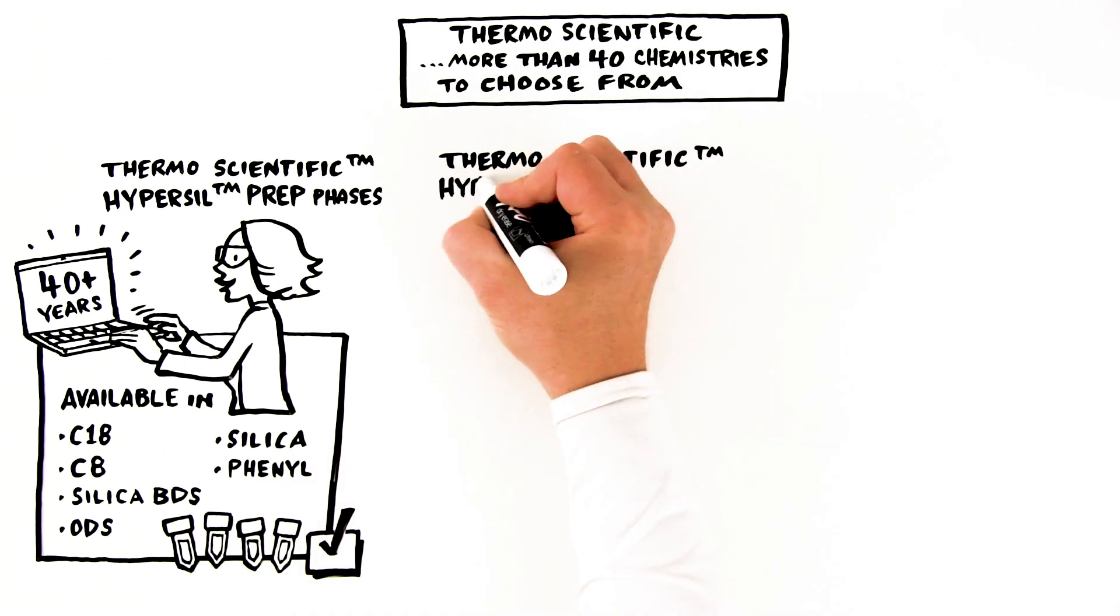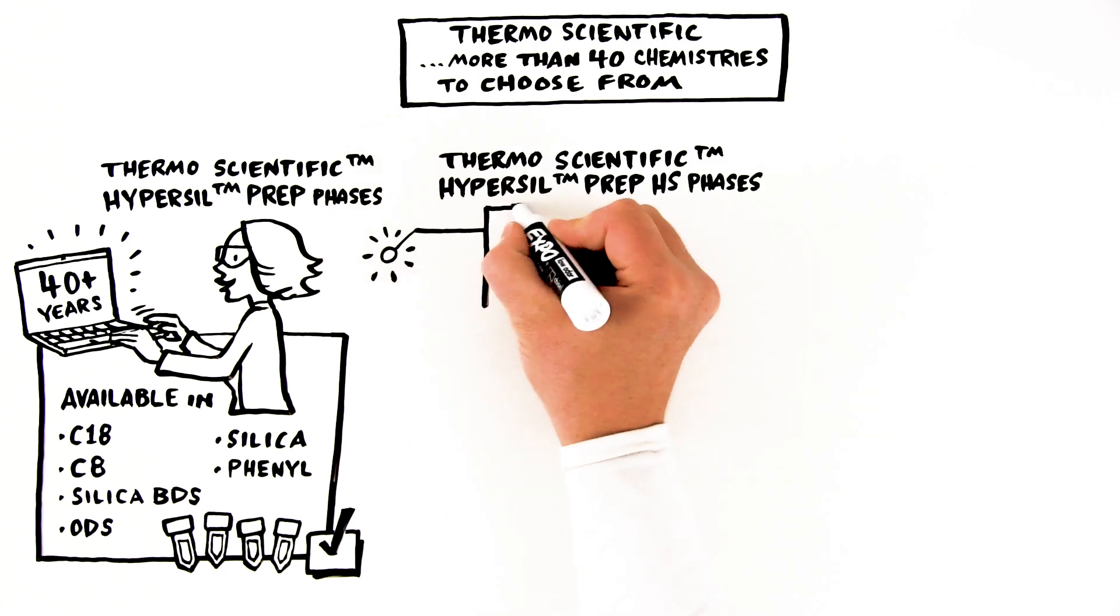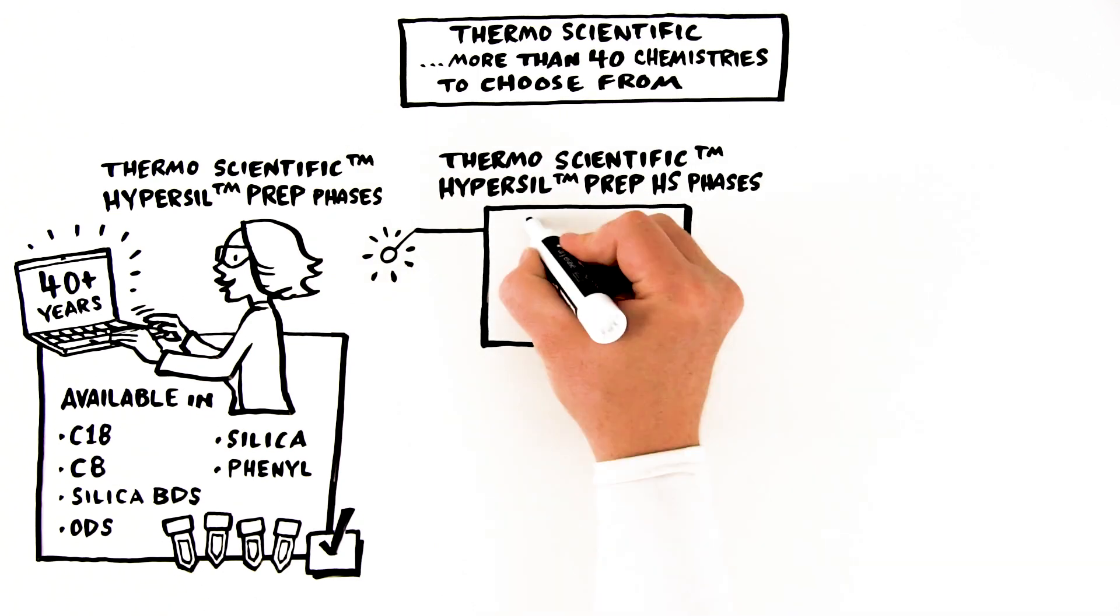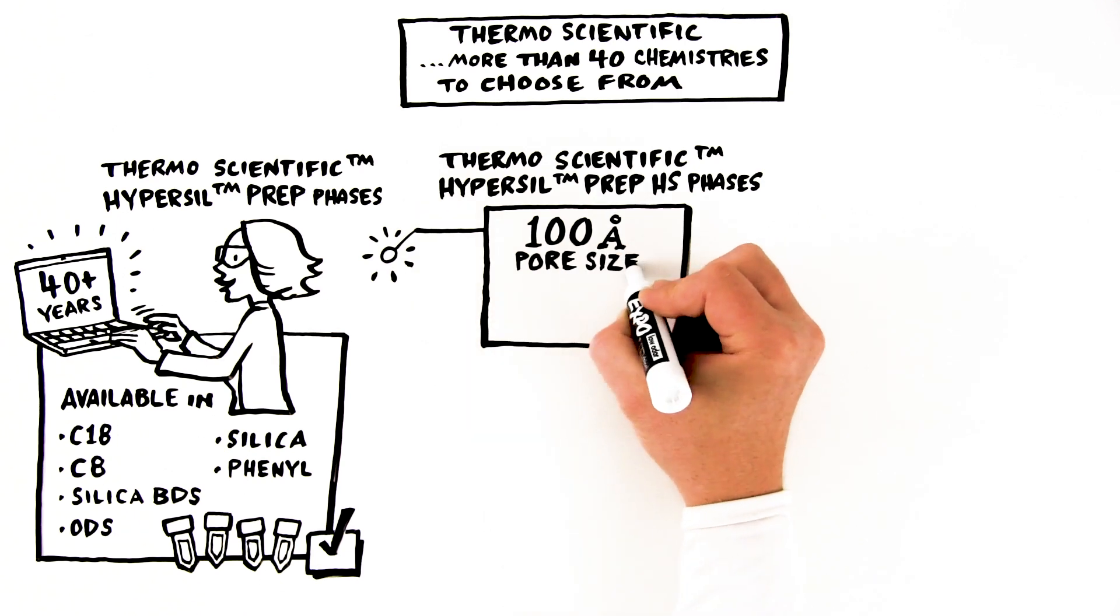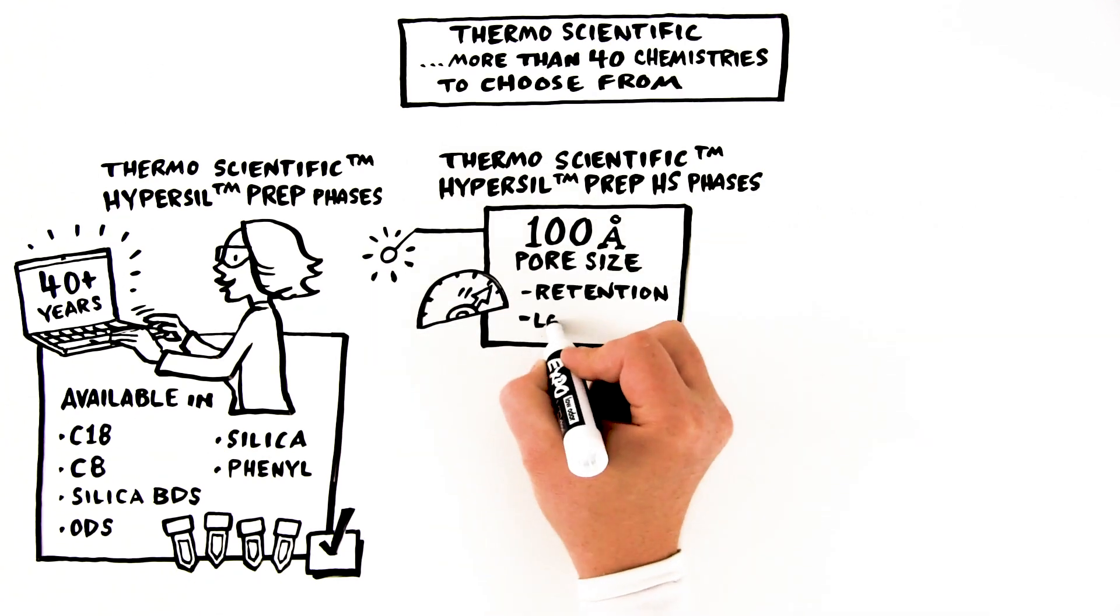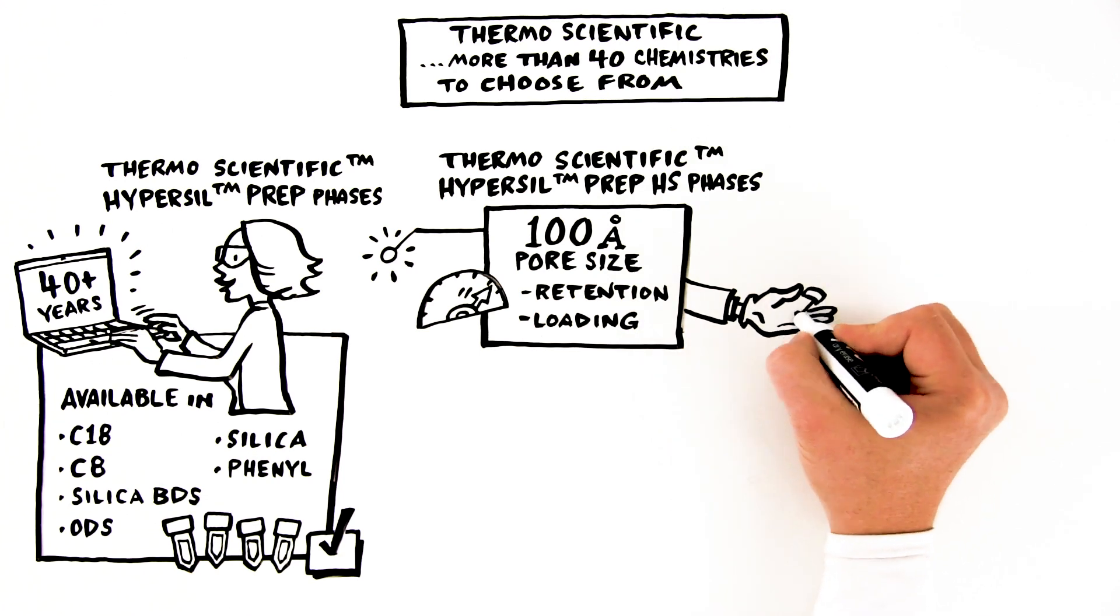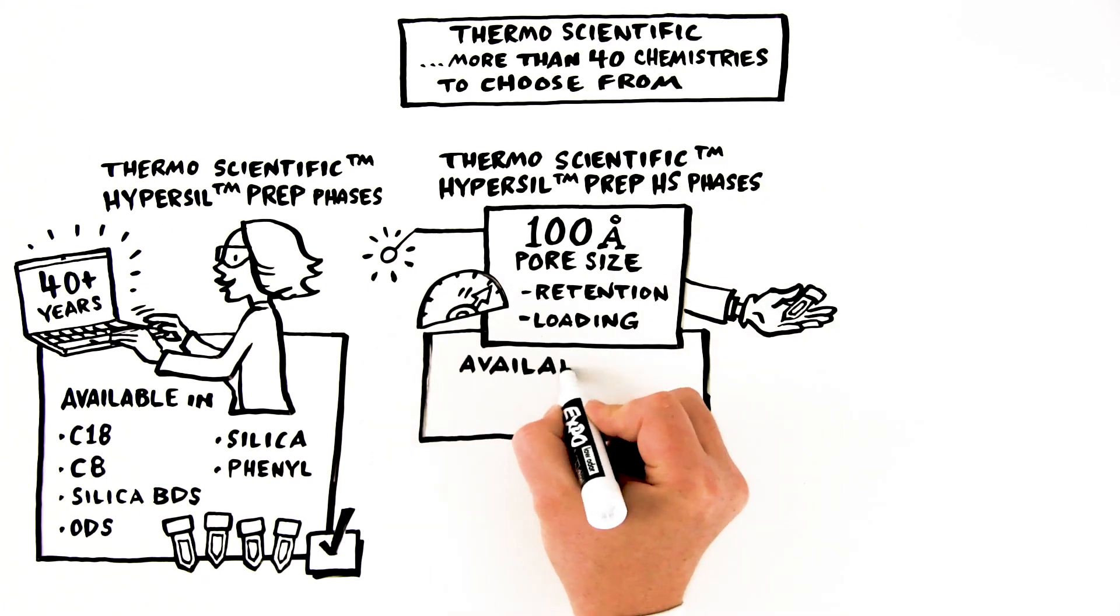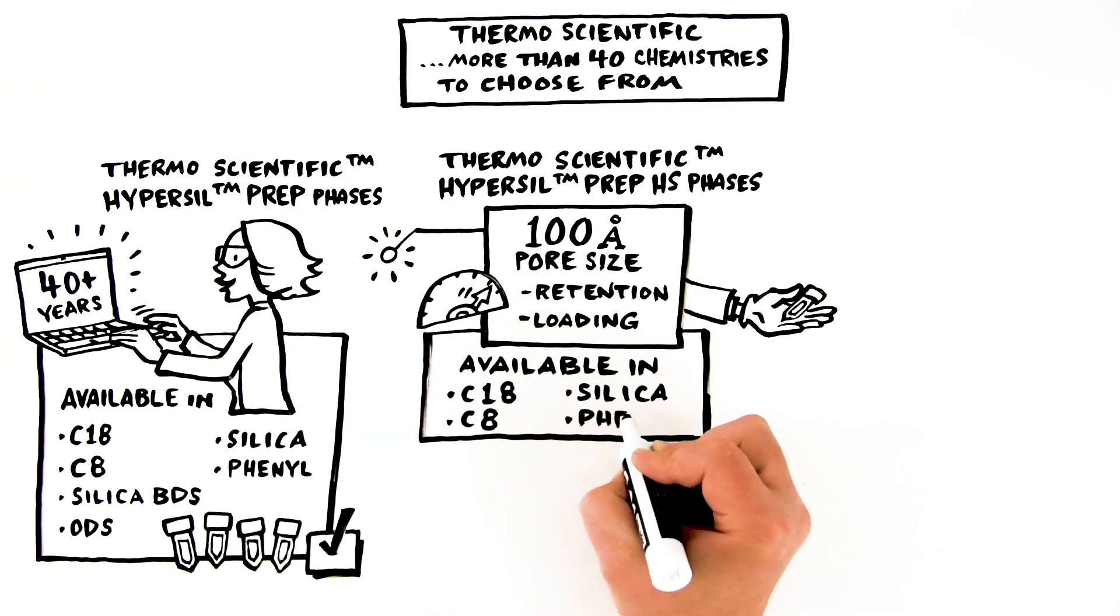Thermoscientific HyperSyl Prep HS phases. The HyperSyl Prep HS range has been designed as a high-surface area particle with a 100-angstrom pore size to maximize retention and loading. An excellent choice for small molecule and drug purification applications, HyperSyl Prep HS is available in C18, C8, Silica, and Phenyl phases.